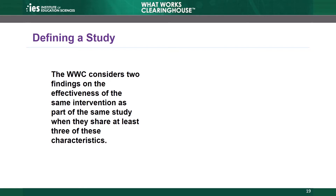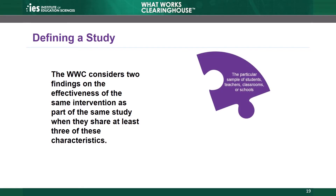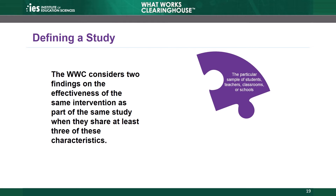These study characteristics include the study sample — the set of students, classrooms, teachers, or schools that the study analyzed. Findings from analyses that include some or all of the same sample members may be related. Another characteristic is the assignment or selection process used to create the intervention and comparison groups in the study sample. A random assignment process is one way of creating the study sample; another way is to form groups by matching students who received the intervention to comparison students who did not.